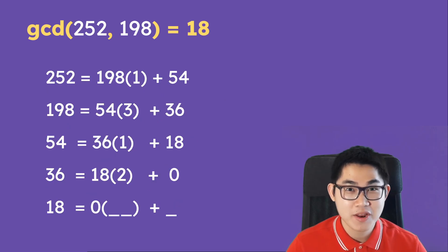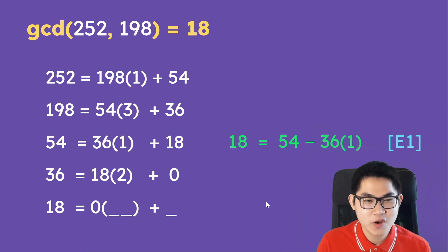So what we just went through is the first part of the extended Euclidean algorithm. And this here is going to be the second part, and it's actually very easy. Let's ignore the last two lines, and we start with this one. So we have 54 is equal to 36 times 1 plus 18. Now, we rewrite this as 18 is equal to 54 minus 36 times 1, right?